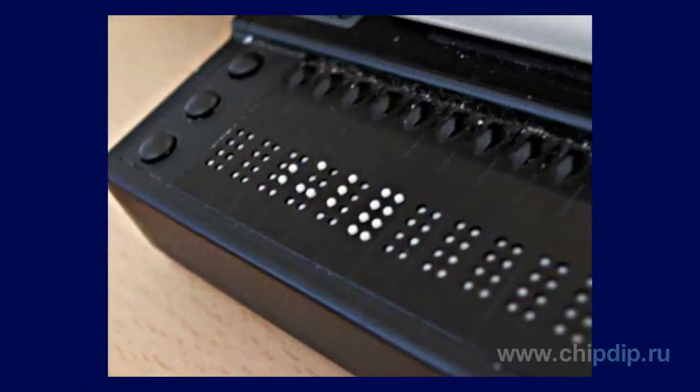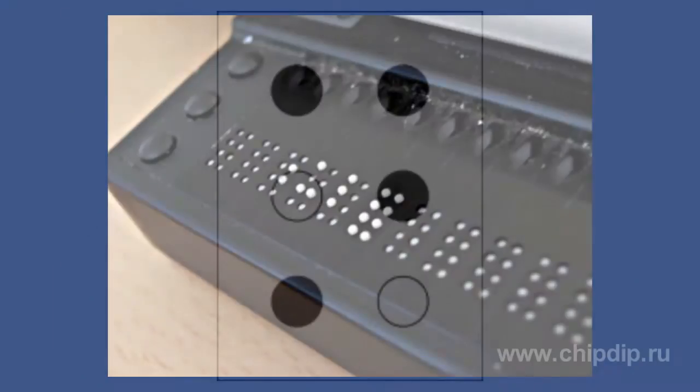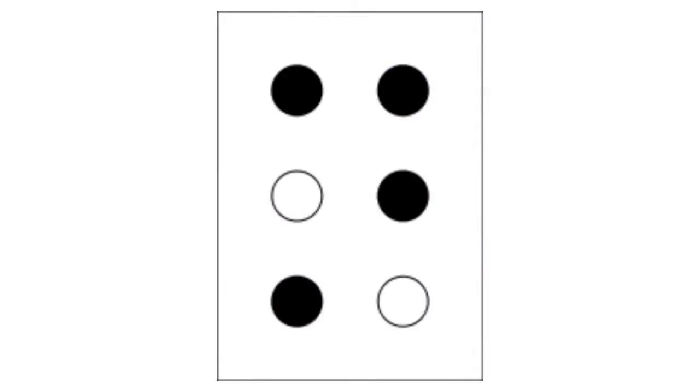The Braille terminal is a device with moving parts that needs to experience daily physical loads. The most common presentation method involves small vertical pins, called dots, moving through holes on a flat surface. Eight or six dots make up one Braille cell, and the Braille terminal contains a row of such cells.